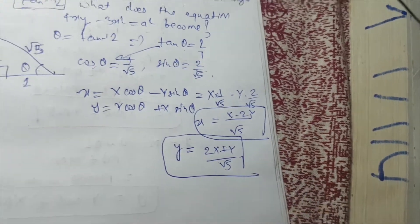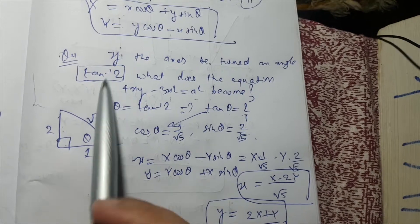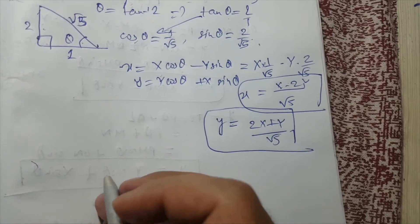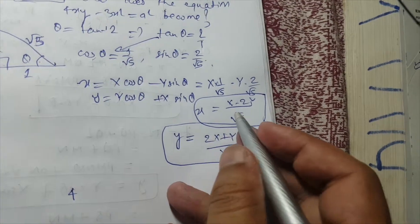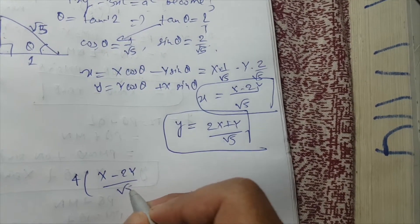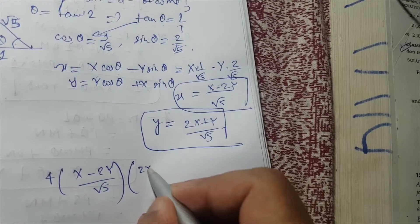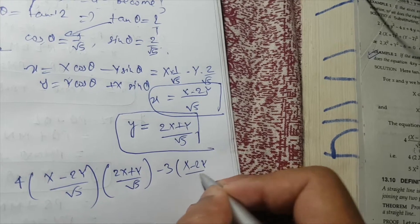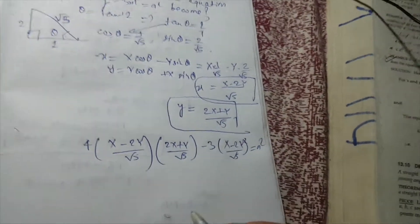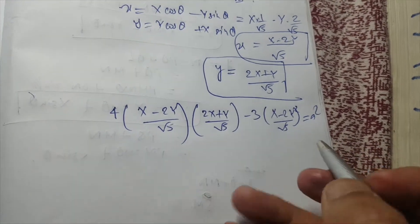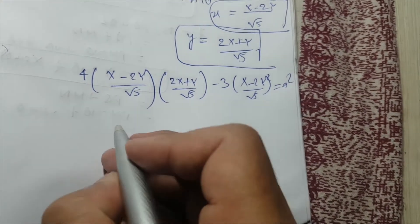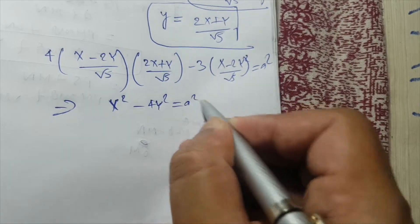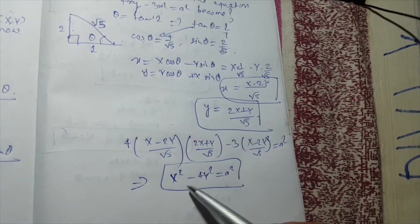We substitute these into the equation. In place of small x and small y we put these values: 4·[(X − 2Y)/√5]·[(2X + Y)/√5] − 3·[(X − 2Y)/√5]² = a². Expanding and simplifying this equation gives the final answer: X² − 4Y² = a².